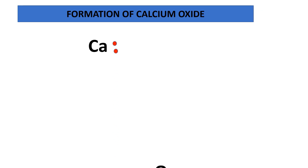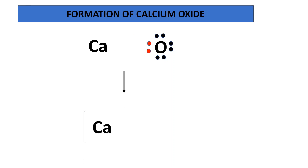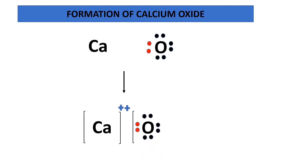The oxygen atom has six electrons in its outermost shell, shown with six dots. Calcium loses its electrons to oxygen. Calcium, by losing electrons, gets converted into a positively charged calcium ion, and oxygen, by gaining electrons, gets converted into a negatively charged oxide ion. This positively charged calcium ion and negatively charged oxide ion are held together by the force of attraction known as an ionic bond.